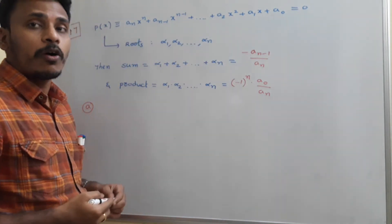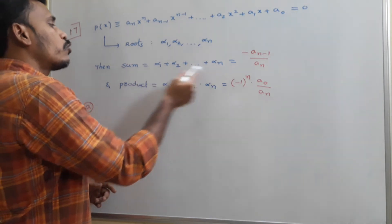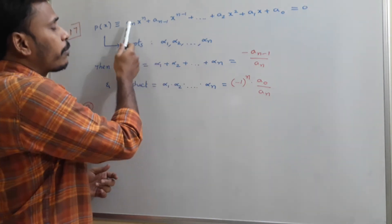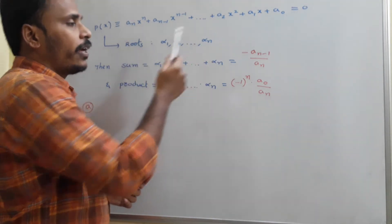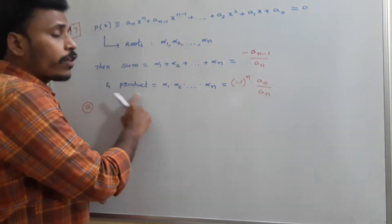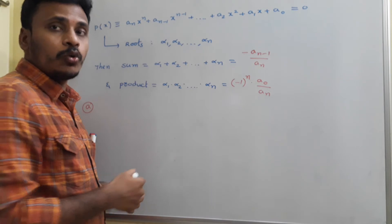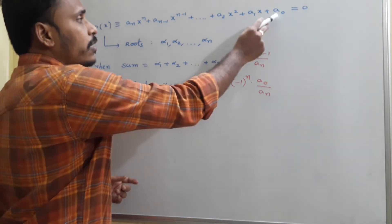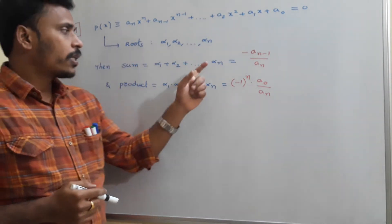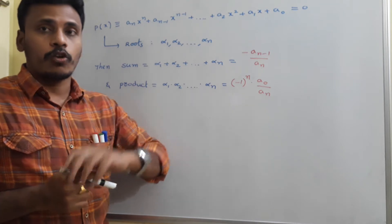What can we say about the sum of the roots? The sum of the roots of the polynomial is simply -aₙ₋₁/aₙ. As well, the product of the roots is (-1)ⁿ times the constant term divided by the leading coefficient. This is the sum of roots and this is the product of the roots.